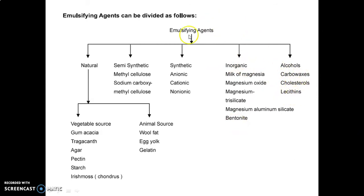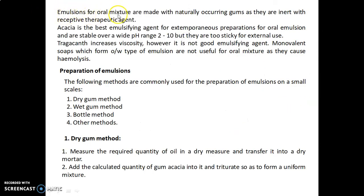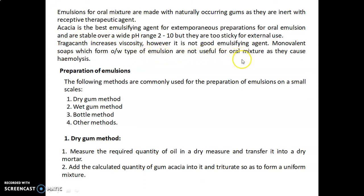Emulsions for oral mixture are made with naturally occurring gums as they are inert with the respective therapeutic agent. Acacia is the best emulsifying agent for extemporaneous preparation of oral emulsions and is stable over a wide pH range of 2 to 10, but it is too sticky for external use. Tragacanth increases viscosity; however, it is not a good emulsifying agent. Monovalent soaps form O/W type emulsions, but they are not useful for oral mixtures as they cause hemolysis.